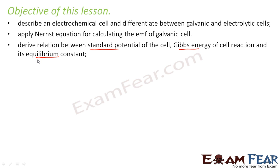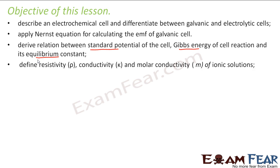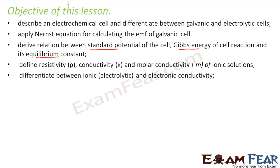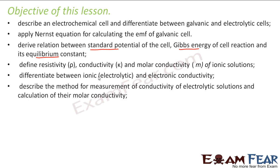We'll define the terms resistivity, conductivity, and molar conductivity for ionic solutions. We'll differentiate between electrolytic and electronic conductivity — electronic conductivity is only for metals, while ionic conductivity is for electrolytes. We'll also describe the method for measurement of conductivity of electrolytic solutions.